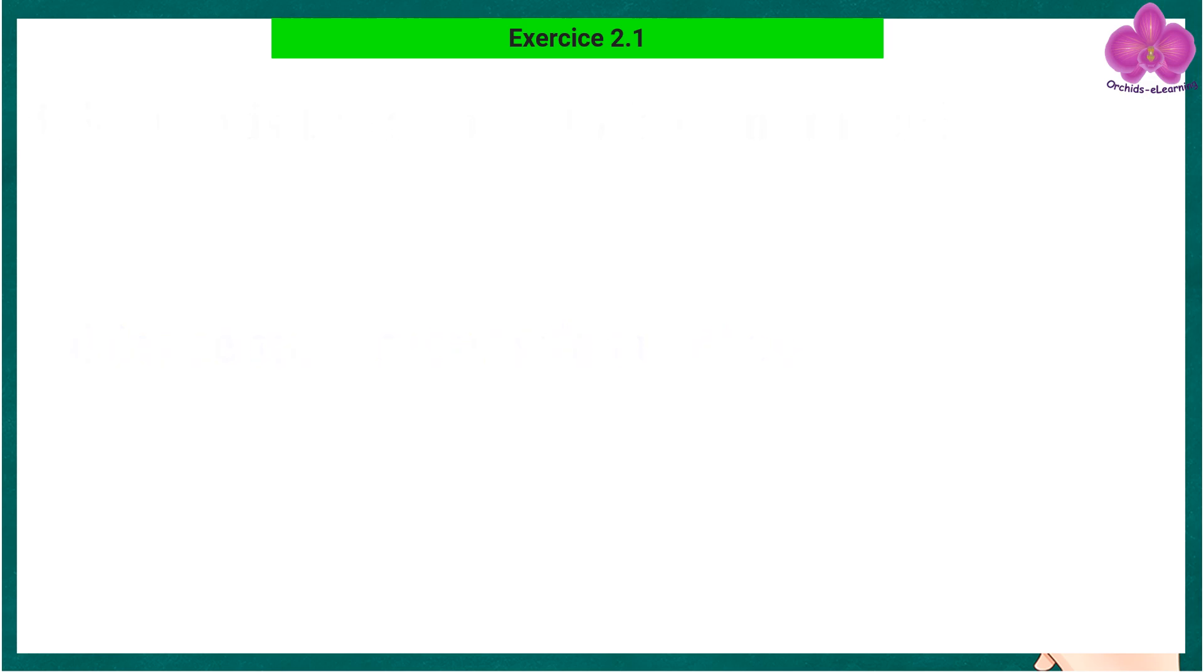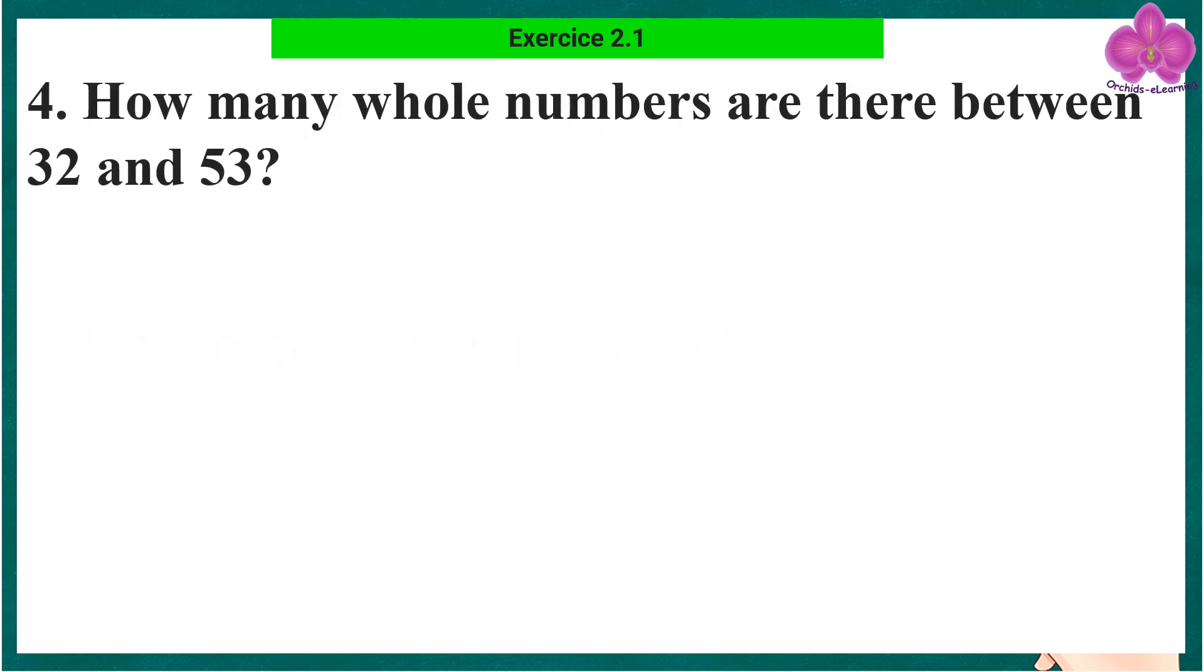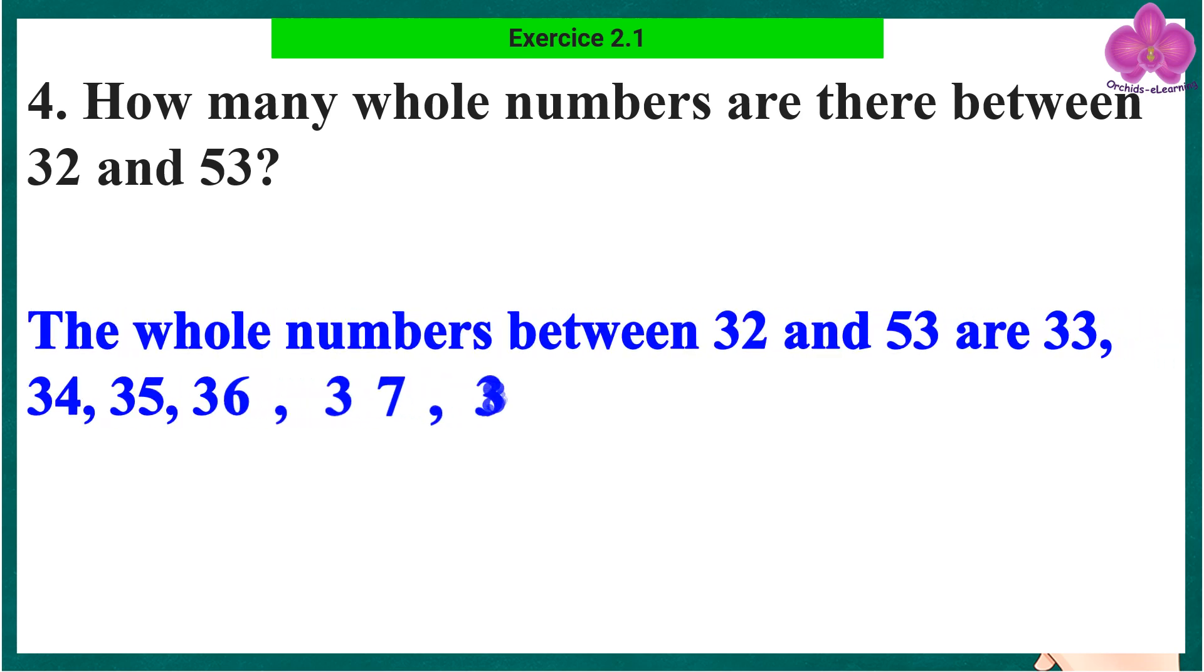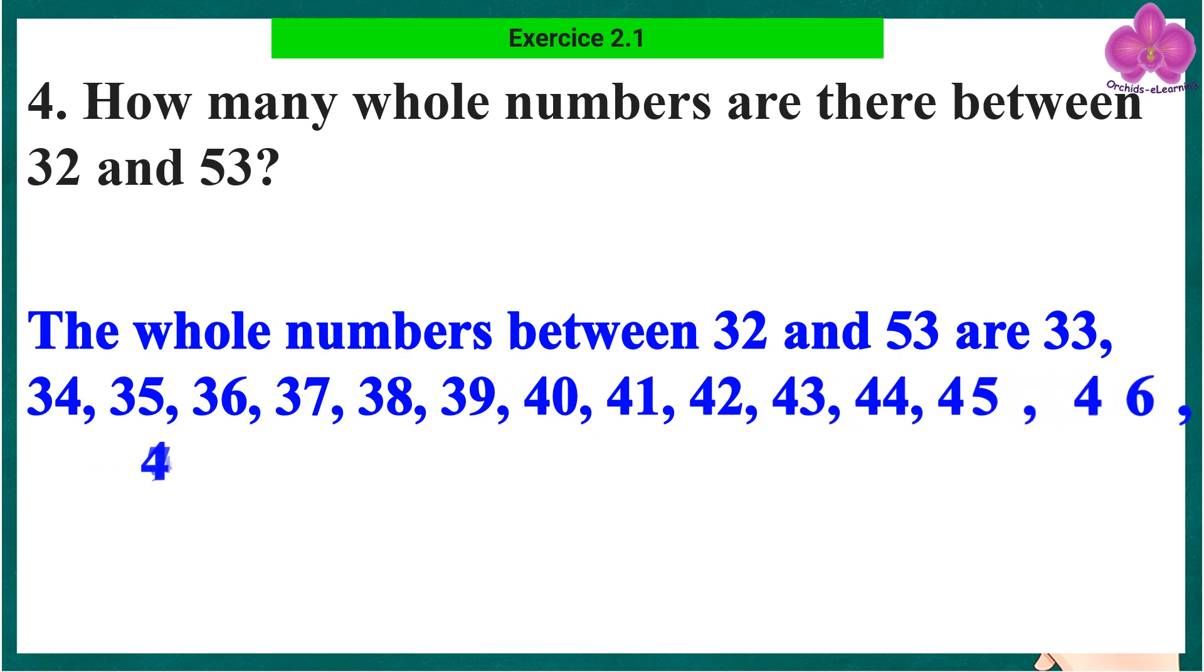Question 4: How many whole numbers are there between 32 and 53? The whole numbers between 32 and 53 are 33, 34, 35, 36, 37, 38, 39, 40, 41, 42, 43, 44, 45, 46, 47, 48, 49, 50, 51, 52.